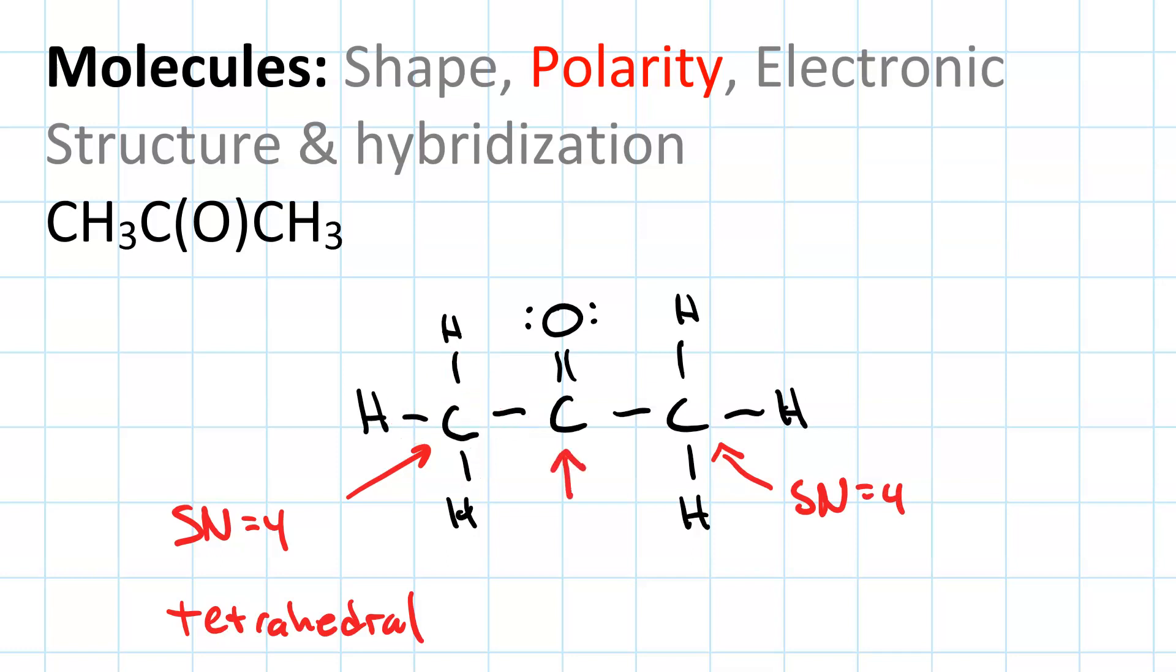Now let's look at the central carbon. It's got three electron groups, steric number of three. None of them are lone pairs, so it's trigonal planar.